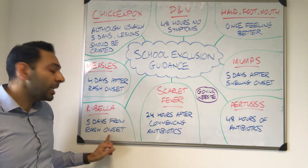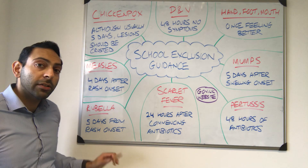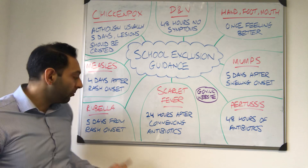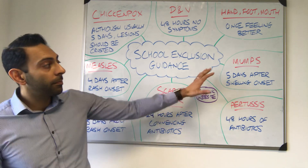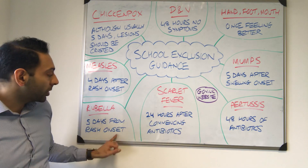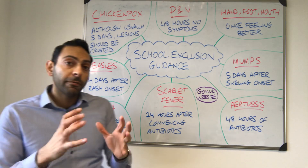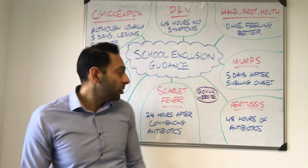Rubella — five days from the rash onset. So again five days, but rash onset this time instead of the swelling.